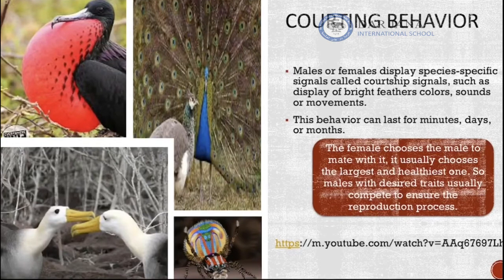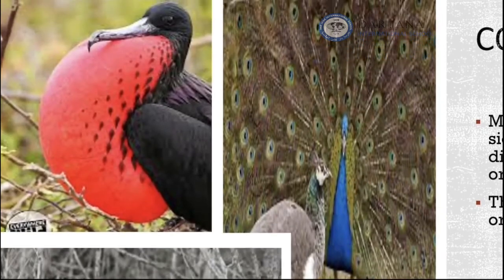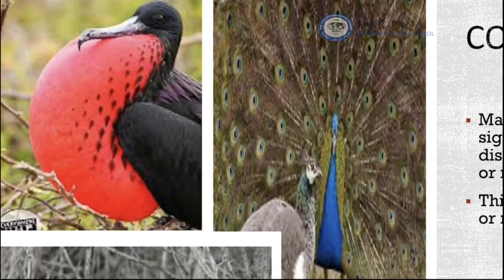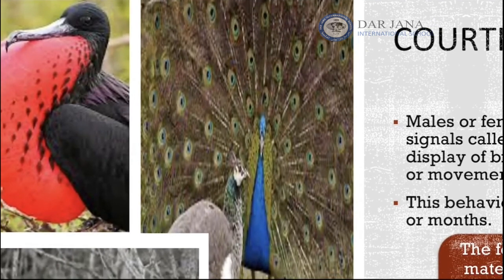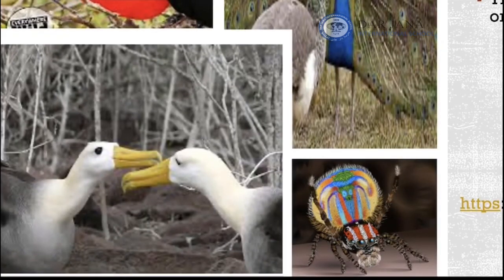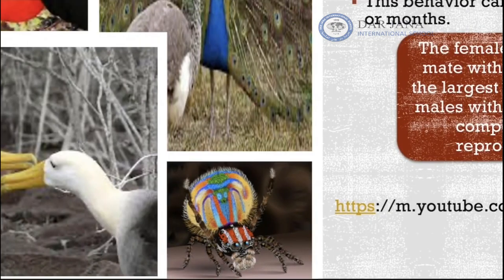Males and females perform species-specific signals called courtship rituals. For example, the male frigatebird inflates a red sack below its beak to attract females during breeding seasons. Courtship rituals can also take the form of colored feathers — such as the peacock's feathers — sounds, dancing, or the different colors of insects.